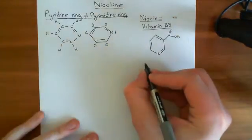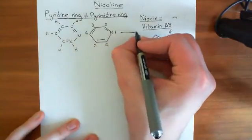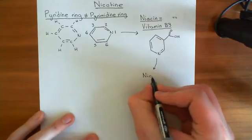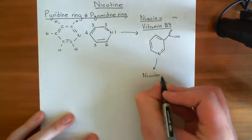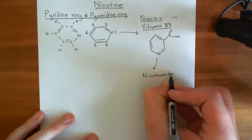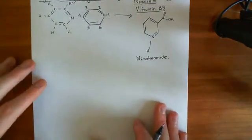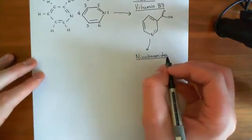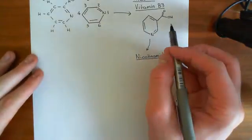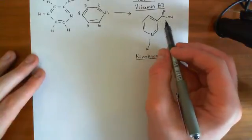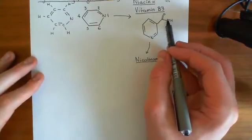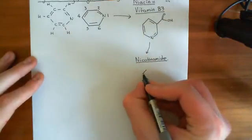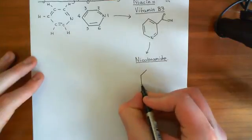Now we'll go up another level of complexity to nicotinamide, getting closer in name to nicotine, and this is the last step before we get to the structure of nicotine. Nicotinamide's structure is: you take niacin or vitamin B3 and you take this alcohol group off the carboxylic acid group and instead put an amine group there to create overall the primary amide.